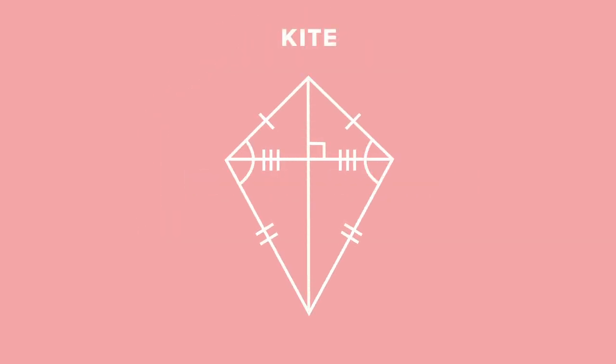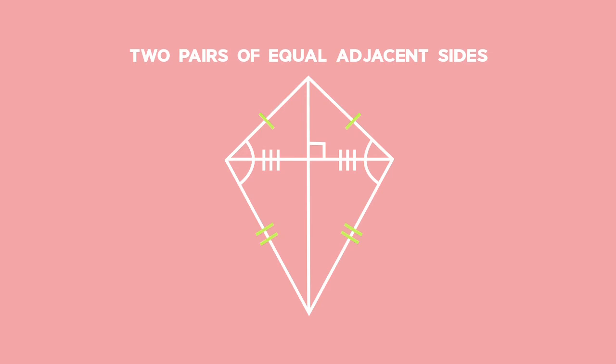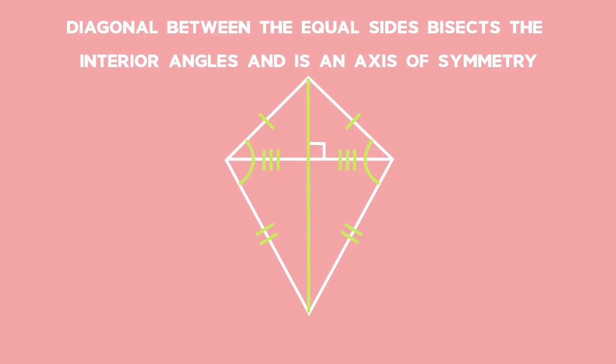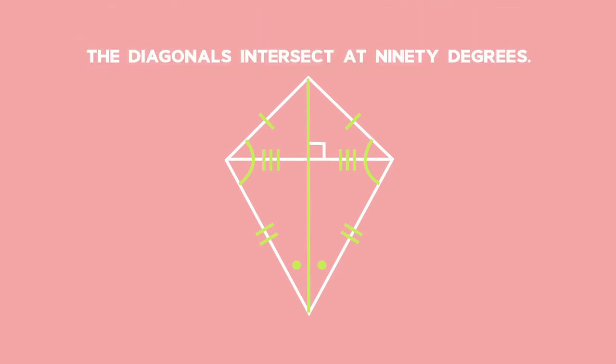Let's look at some other special quadrilaterals which are not parallelograms. A kite is one example. A kite is a flat shape with four straight sides. It has two pairs of equal adjacent sides, as drawn in the diagram. The diagonal between the equal sides bisects the other diagonal. One pair of opposite angles are equal — the angles between the unequal sides. The diagonal between the equal sides bisects the interior angles and is the axis of symmetry. The diagonals intersect at 90 degrees.